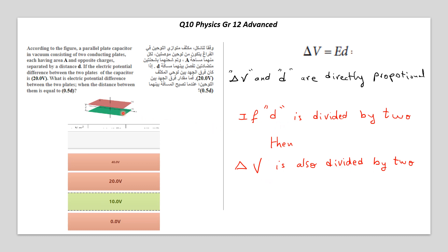The initial delta V is 20 volts. We divide it by 2, and the answer is 10 volts. So in this question, option C is the correct answer.